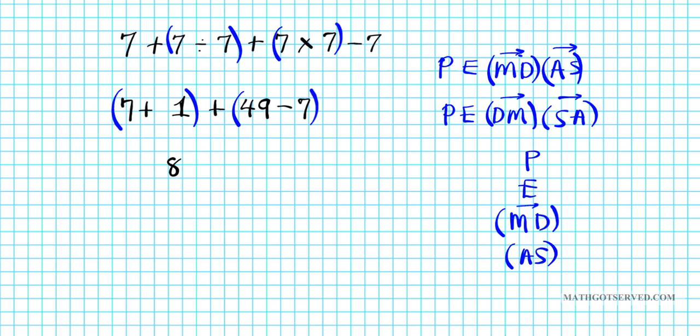So seven plus one is eight plus 49 minus seven is 42. And we are left with one last operation. And that last operation is addition. Eight plus 42 is 50. So do not forget your order of operations. And most importantly, always group before you carry out your operation in order to communicate your intentions to the reader.